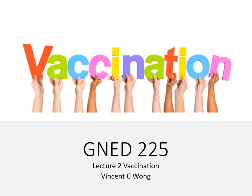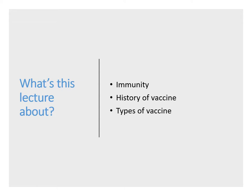Welcome to lecture 2. The topic for lecture 2 is vaccination. In this lecture we will talk about what immunity is, the different types of immunity, what happens if the immune system is not working properly, the history of vaccine development, and the different types of vaccines that are available.